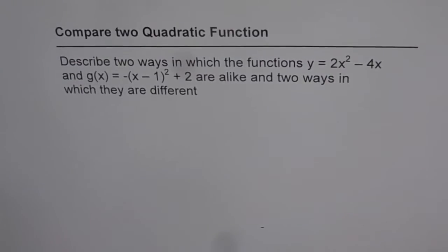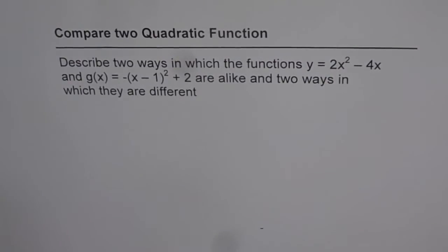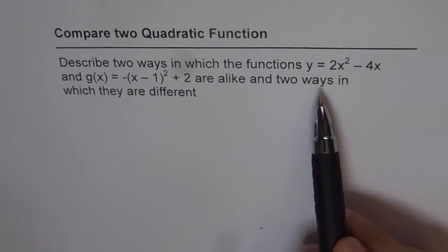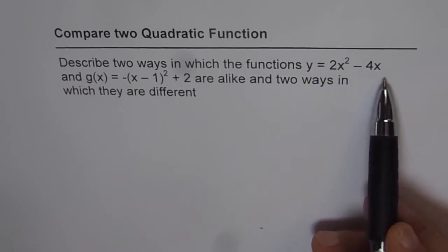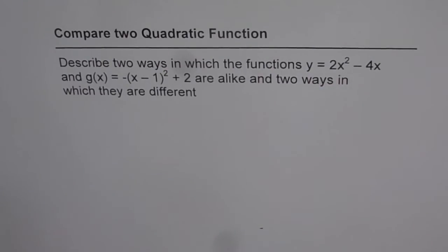Compare two quadratic functions. Describe two ways in which the functions y equals 2x squared minus 4x and g(x) equals minus (x minus 1) whole squared plus 2 are alike and two ways in which they are different.